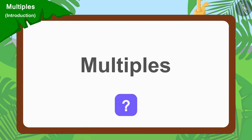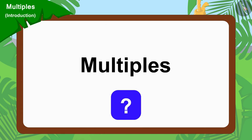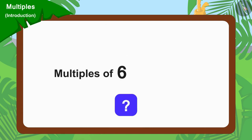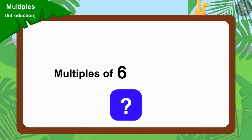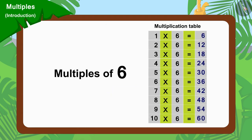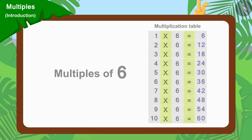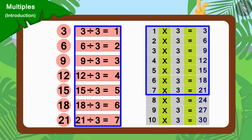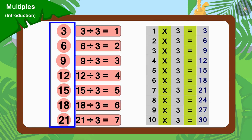Do you know another interesting thing about multiples? We can find the multiples of any number from its multiplication table. For example, if you look closely, you will find all these numbers in the multiplication table of 3.